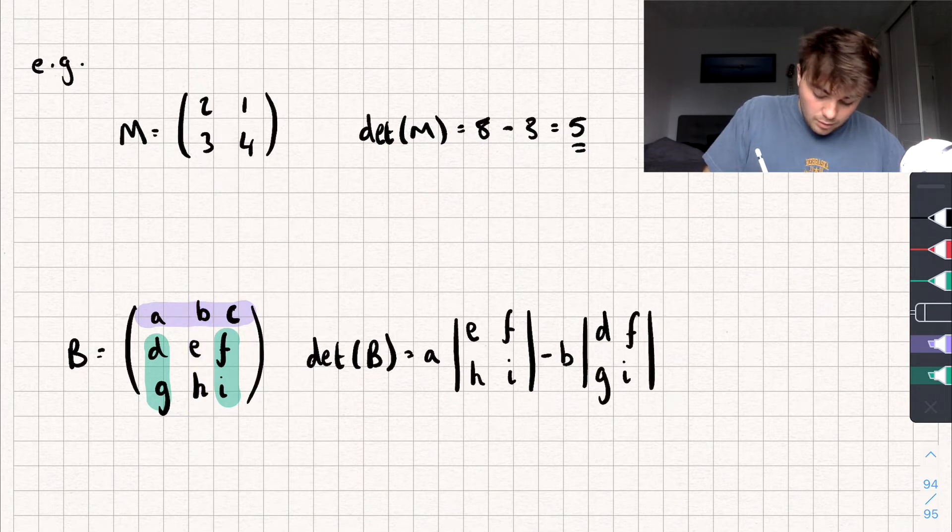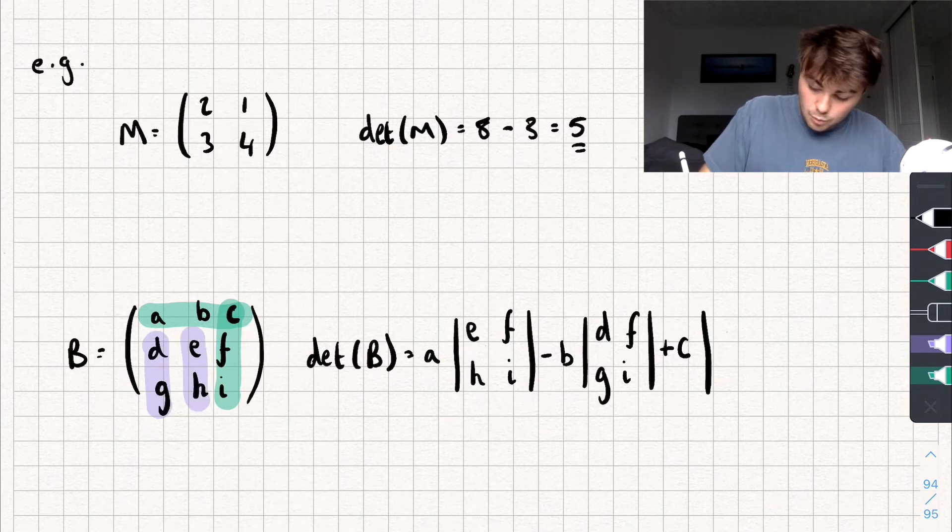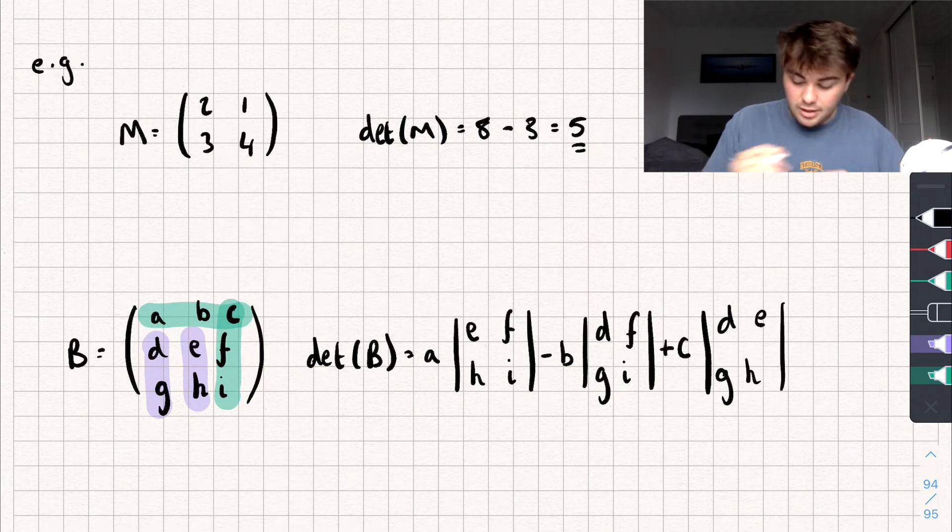And finally, we're going to take element c, so we're going to add element c, and multiply it by its minor determinant, which can be found the same way, so eliminate the rows and columns element c is in. And then we find the determinant of what's left, so d, e, g, h, like that.